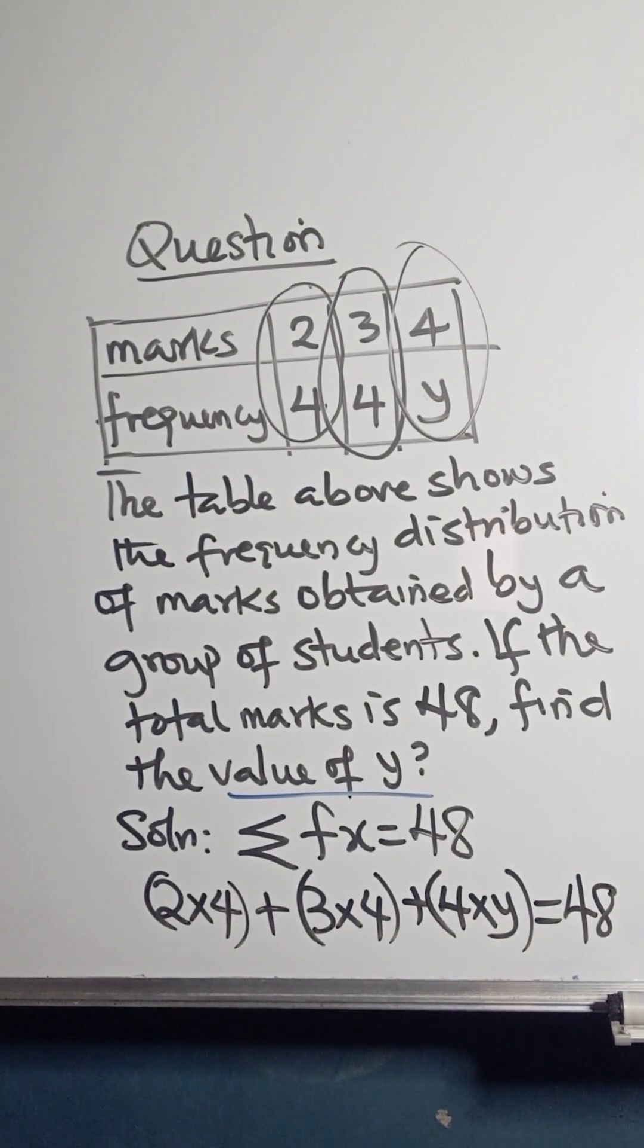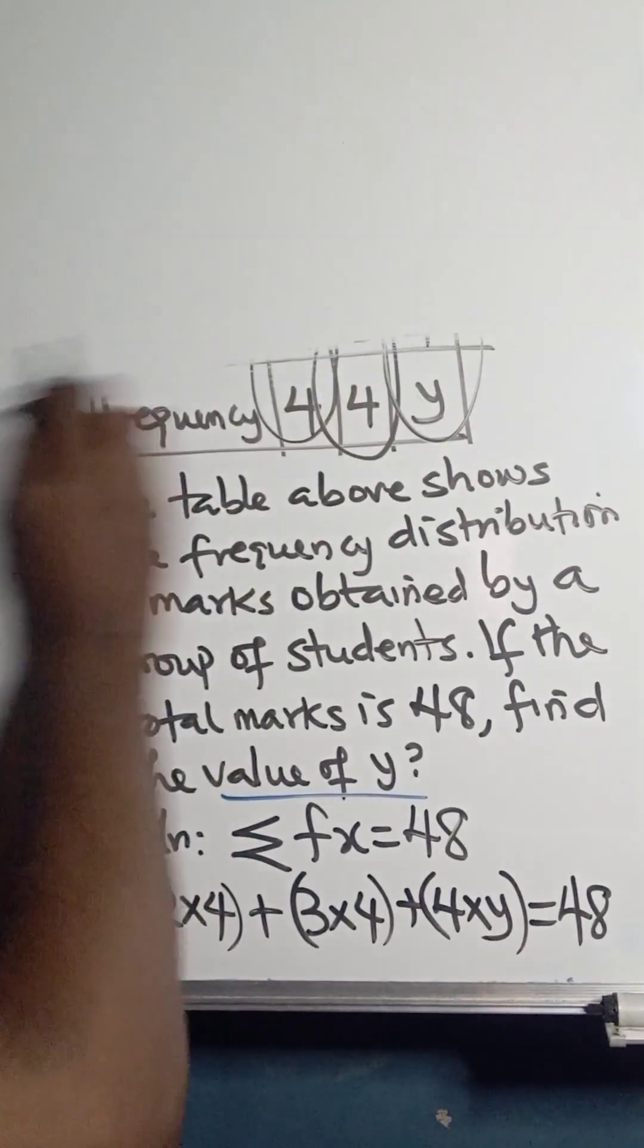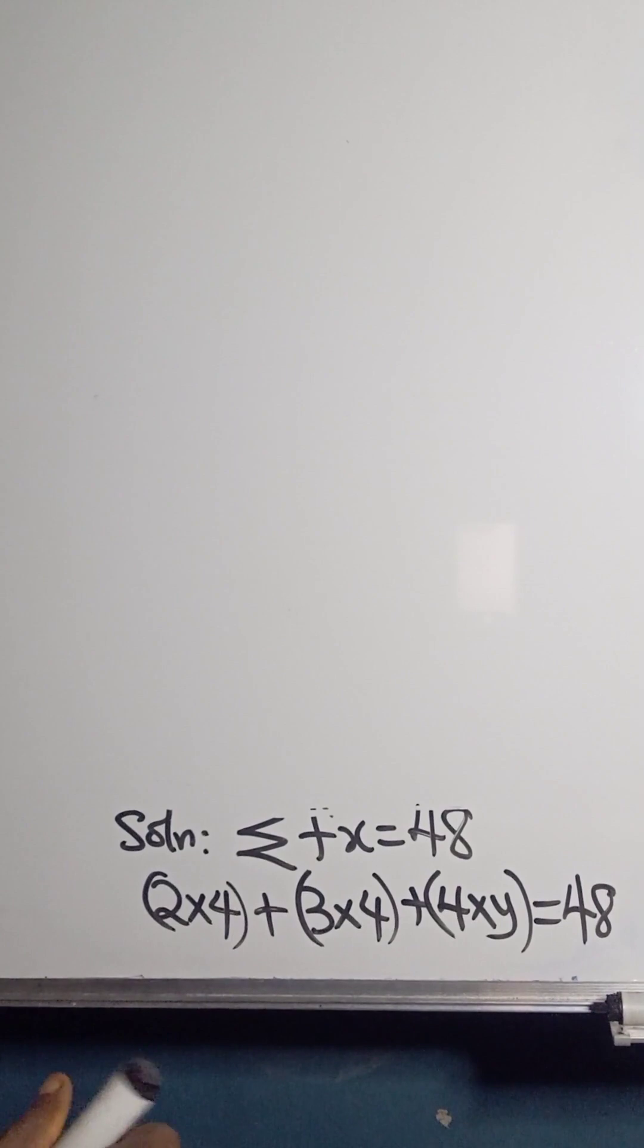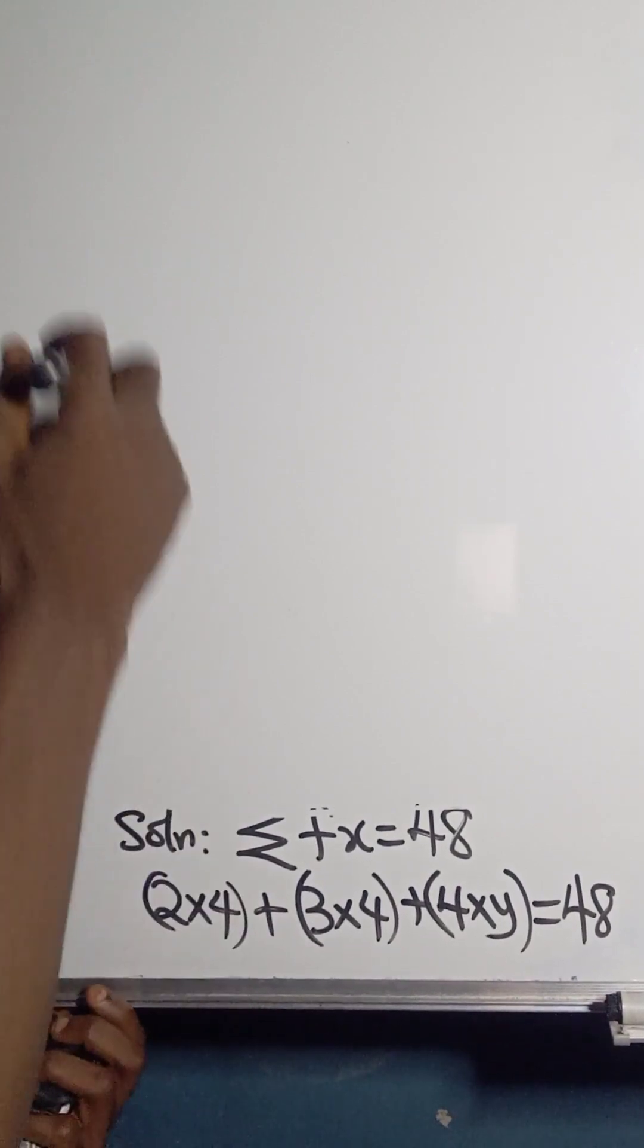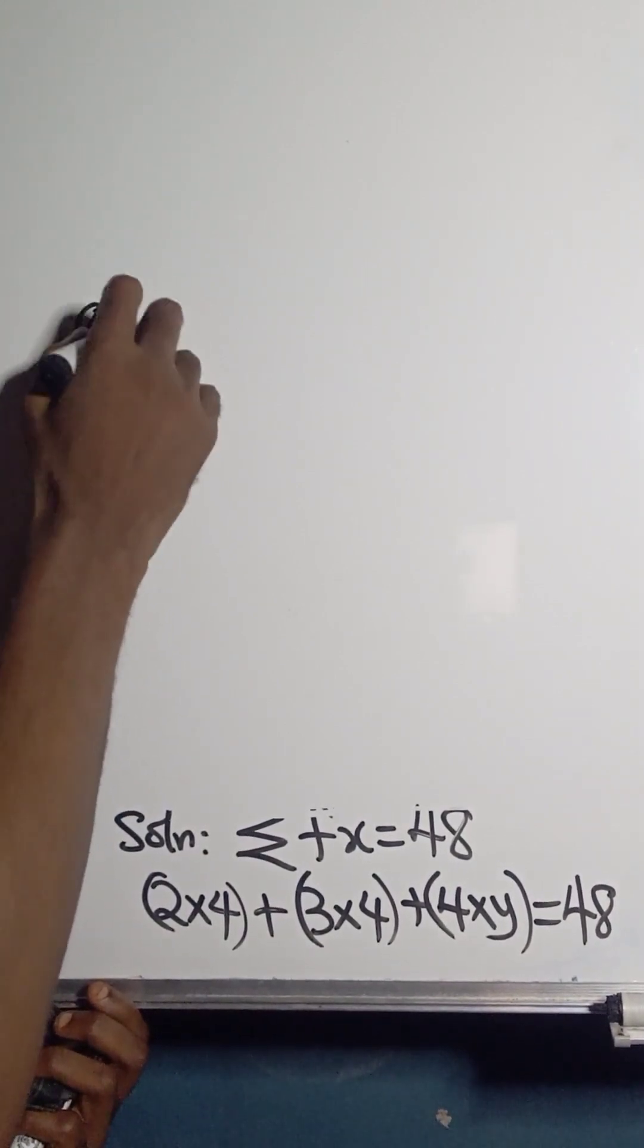So 2 times 4 is 8, plus 3 times 4 is 12, plus 4 times y is 4y equals 48.